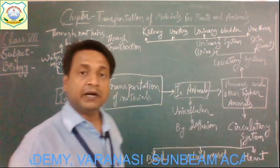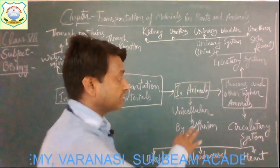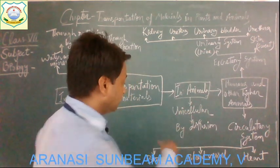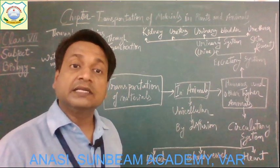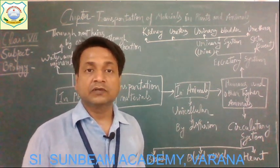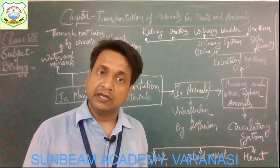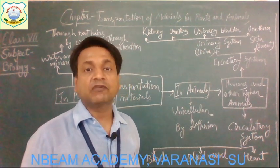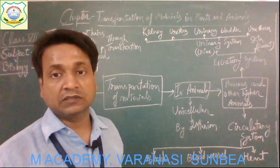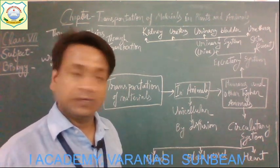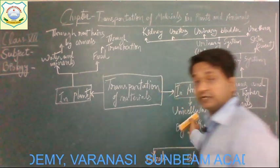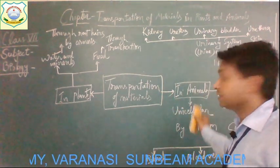These are the three different parts of which the circulatory system consists. Again, blood consists of four different types of substances. I am going to explain the circulatory system further.